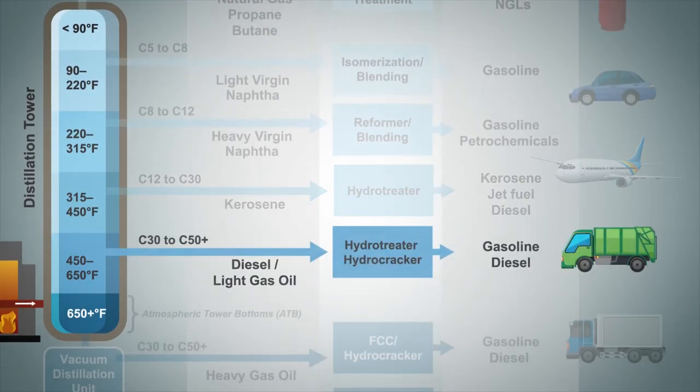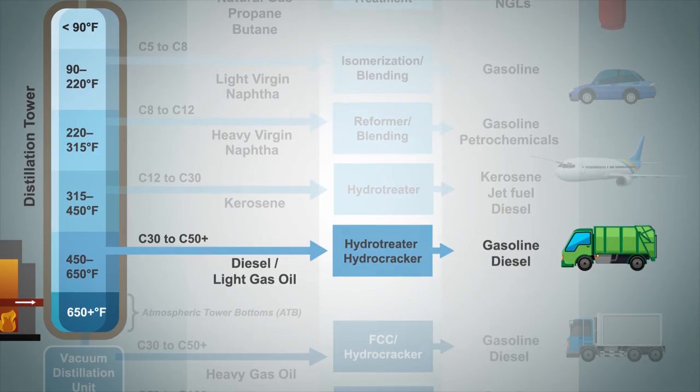Diesel boils between 450 and 650 degrees Fahrenheit. And like kerosene, diesel often has to be treated to remove sulfur before being sold as diesel fuel. Some refineries have the flexibility to send this material to another unit for additional conversion, where the diesel can be converted into a gasoline-boiling range material.